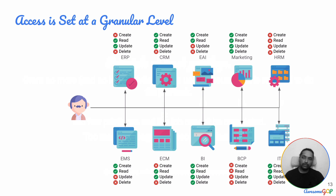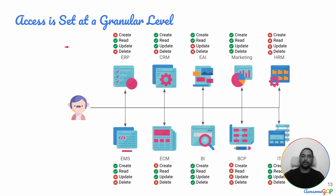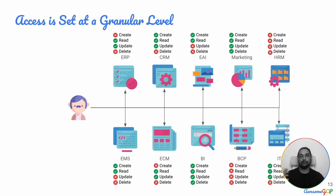Access and permissions need to be granular. It's not just about blocking access to the entire HRM system while allowing the entire ERP system. Instead, on the ERP system, a user might be allowed to read and update data but not delete anything. There may be requirements that all changes must be tracked and you can only make new changes — like an accounting book, you can't edit something from the past. For CRM, a user might have create, read, and update permissions but not delete. Usually the permissions are even more granular than this.